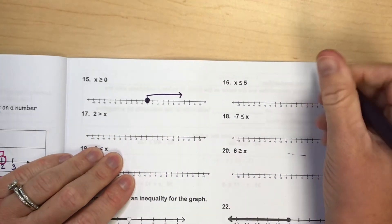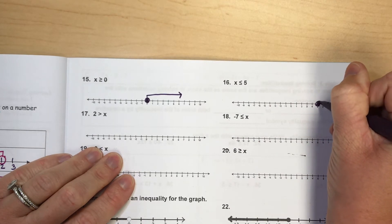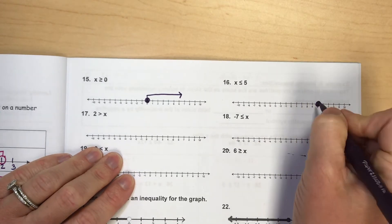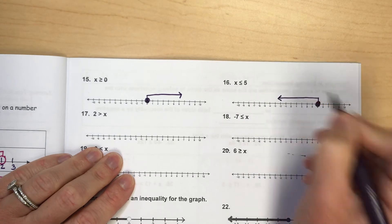For x is less than or equal to 5, find that number 5 on your number line and shade it in. And we want to shade less than, which would be towards the left.